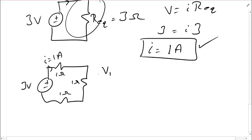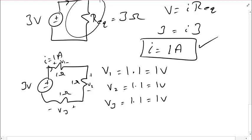Which means that I have V1 is 1 amp times 1 ohm, or 1 volt. V2, similarly, is 1 amp times 1 ohm. And V3, let's put the plus and the minuses in there, 1 amp times 1 ohm, or 1 volt. Now, my circuit is solved.